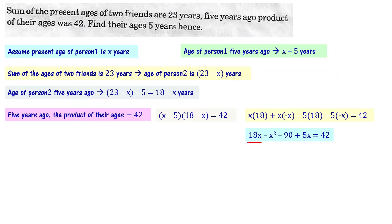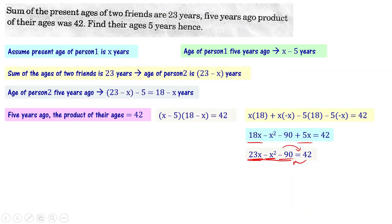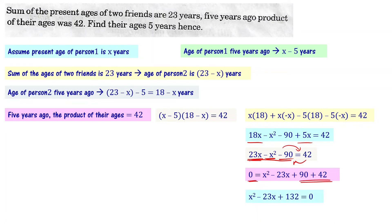From 23x − x² − 90 = 42, transposing all terms to one side: rearranging by multiplying through by −1 and transposing gives x² − 23x + 90 + 42 = 0. This simplifies to x² − 23x + 132 = 0. This is the quadratic equation we need to solve to find the value of x, which gives the present ages of both persons.